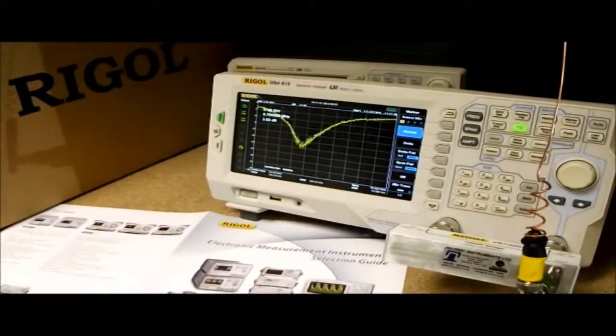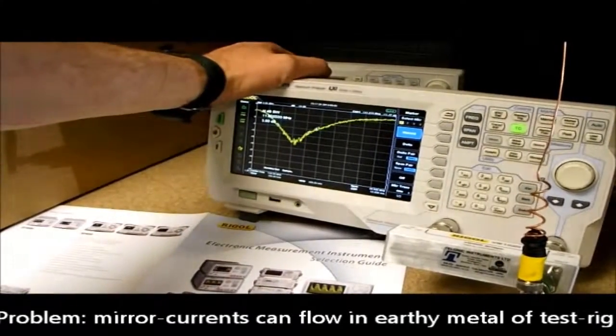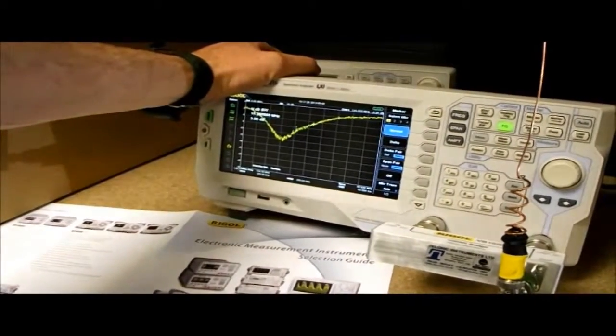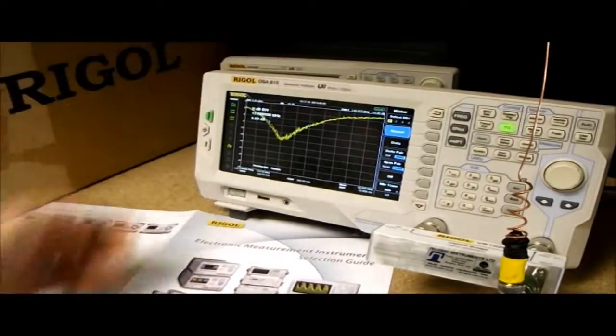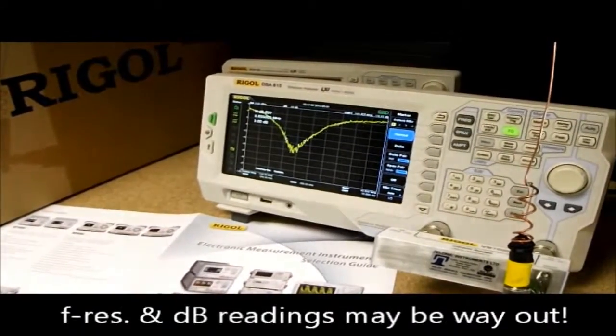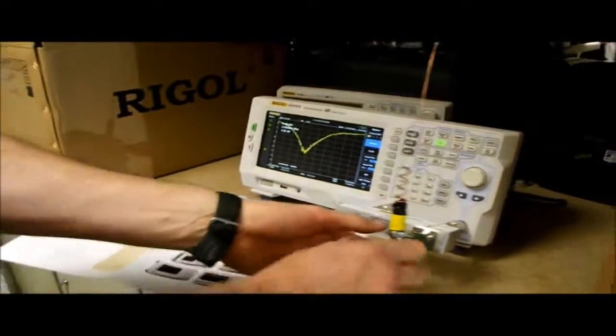Now, this is an incorrect procedure for testing a rubber duck antenna. You can see if I simply put my hand on the edge of the analyzer there, then the trace of resonance shifts down by about 8 MHz. If I take my hand away again, it shifts back up again. There's clearly something wrong with this test setup. So what we need to do is use the correct procedure.